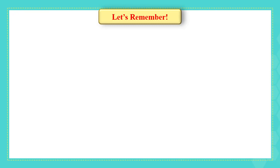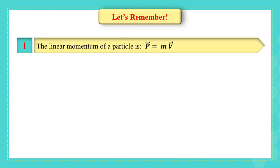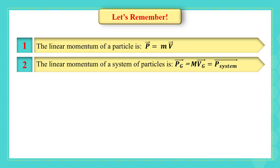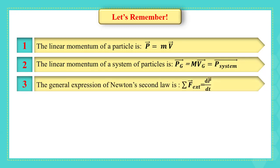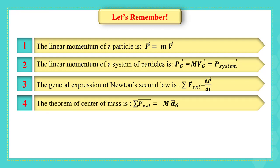We defined the linear momentum as p-vector equals mv. We talked about the linear momentum of a system of particles to be p of the center of mass equals to the p of the system. The general expression of Newton's second law is the sum of forces equals to dp by dt.